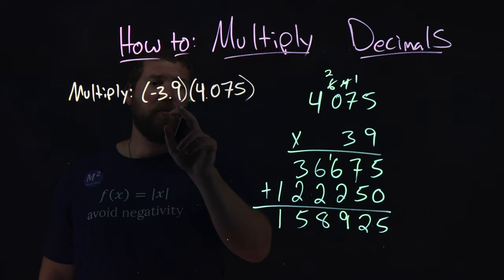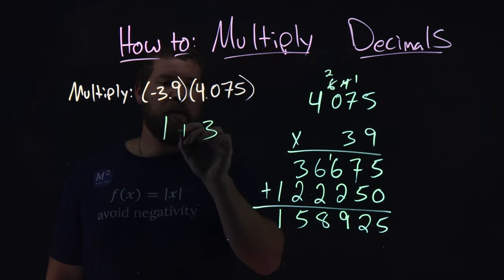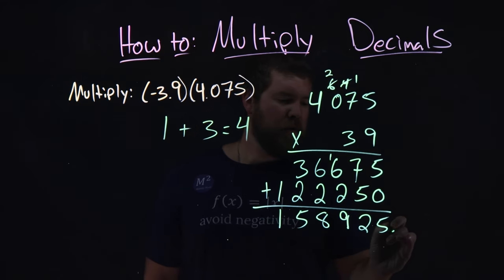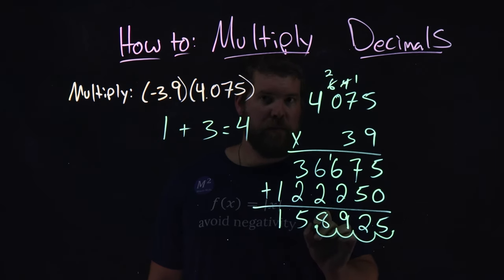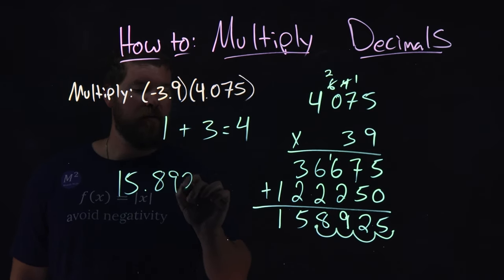Now, let's look at our original decimals. We have one decimal place here, and 3 on the second number. We add them together, and we get 4. So, we take this number here, the decimal place right here, and move it over 4 spots to the left. 1, 2, 3, 4. And so, we have 15.8925.